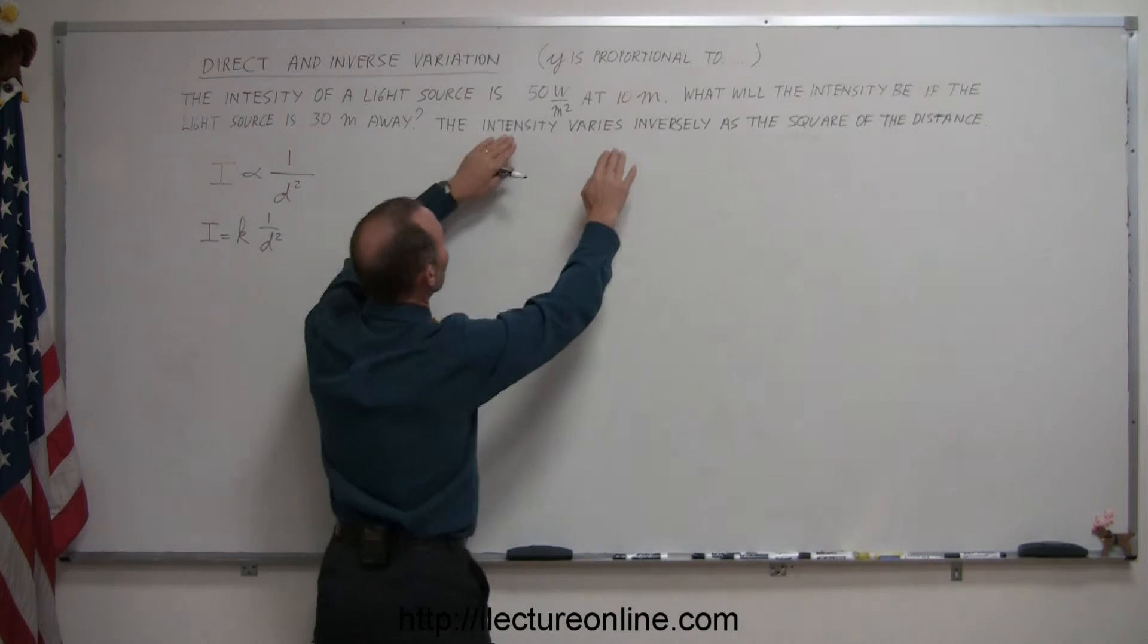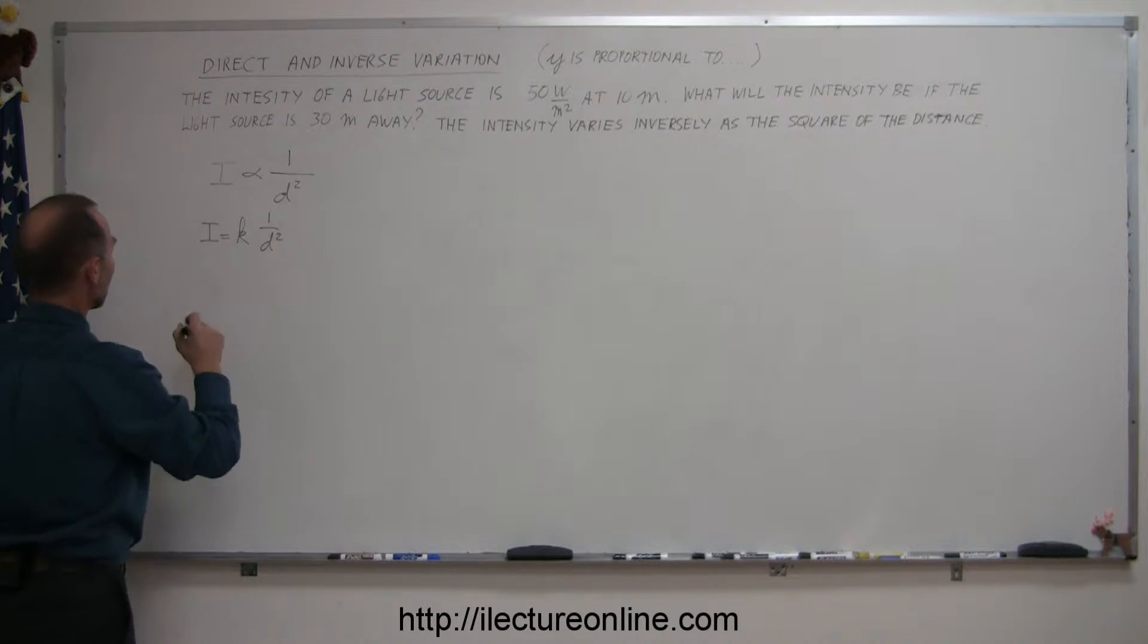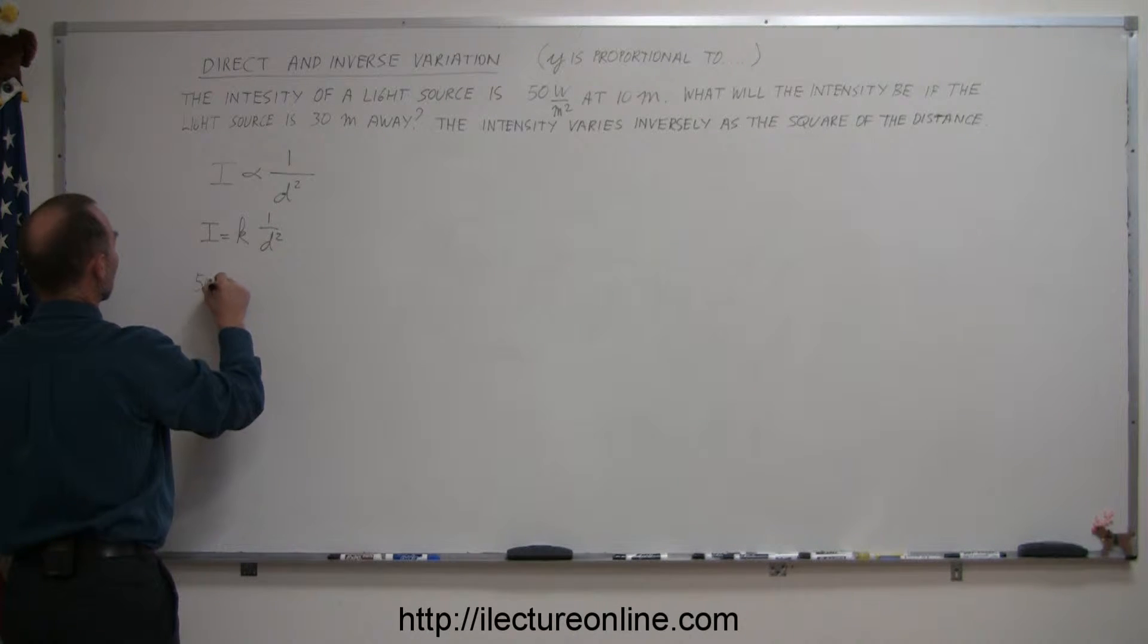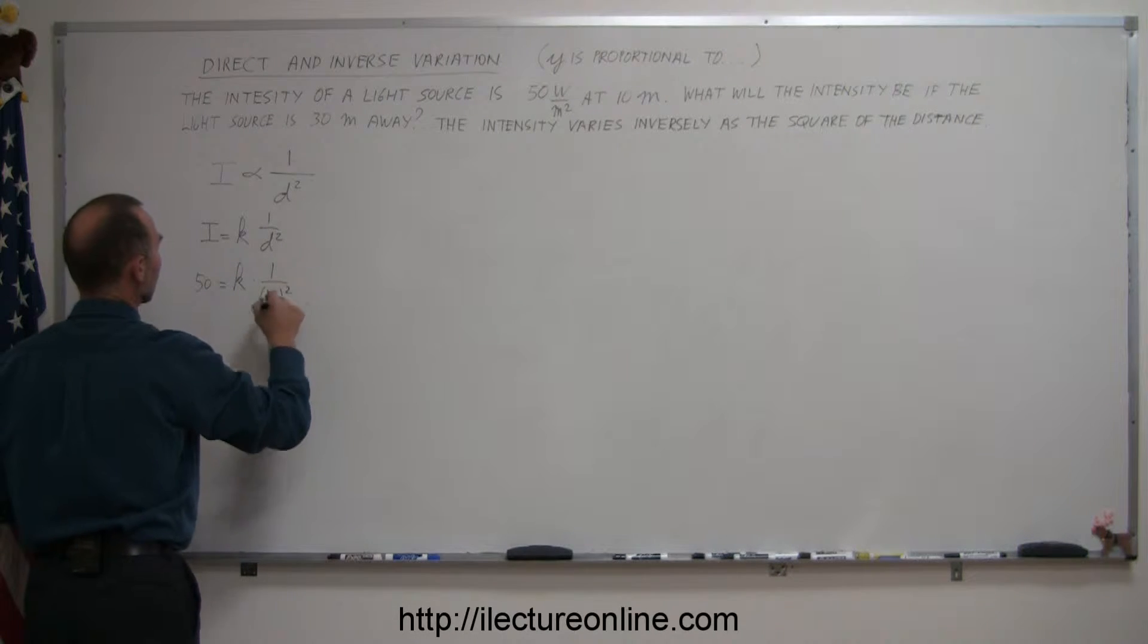Well plug in the values that are given in for I and d, and we can figure out what k is equal to. So when the intensity is 50 watts per square meter, then you have k times 1 over the distance 10 meters squared.